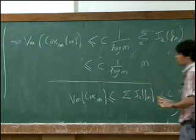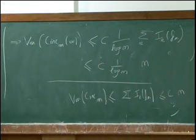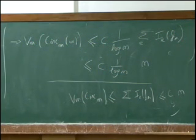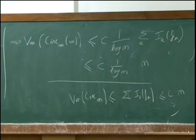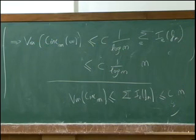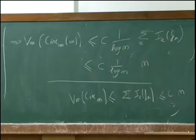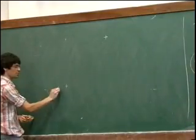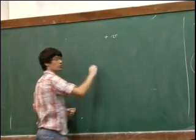In the original Benjamin-Kalai-Schramm statement, when you take two points and want to know the fluctuation of the distance between them for points that are far apart, the argument extends similarly, though I won't go into those details here.